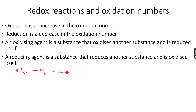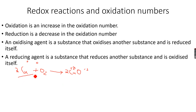Let's take the example: 2Cu + O₂ → 2CuO. The oxidation state of copper goes from zero to plus 2, so copper is getting oxidized. The oxidation state of oxygen goes from zero to minus 2, so oxygen is getting reduced. Because copper reduces the oxygen, copper acts as a reducing agent.